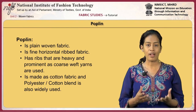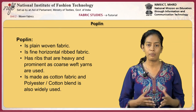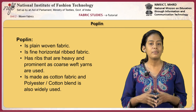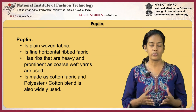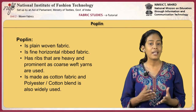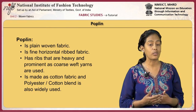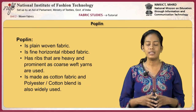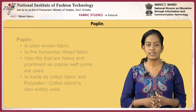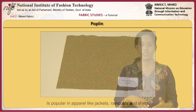Poplin is a plain woven fabric with fine horizontal ribs. The ribs are heavy and prominent as coarse weft yarns are used. It is made as a cotton fabric, though polyester-cotton blend is also widely used. Poplin fabric is usually available in solid colours, and is popular in apparel like jackets, raincoats and shirts.